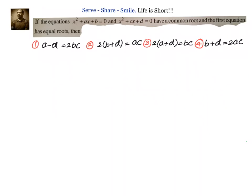If the equations x² + ax + b = 0 and x² + cx + d = 0 have a common root, and the first equation has equal roots, then which of these conditions is correct?